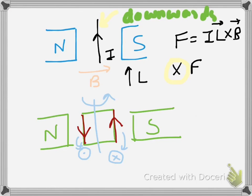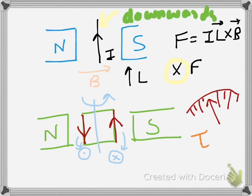If I connect this particular coil with a pointer, the pointer is also going to move. When the pointer moves in a scale, the scale can be calibrated so that the torque — I should call it a torque, represented by τ — can be directly proportional to the current flowing in the system.